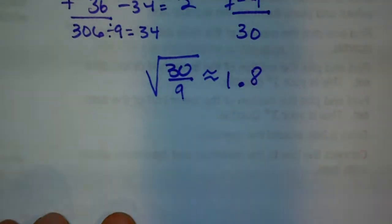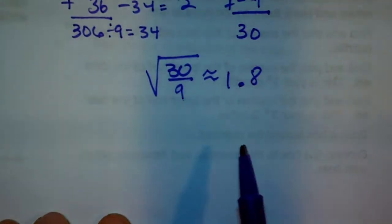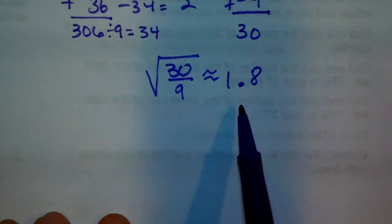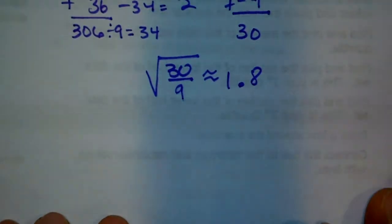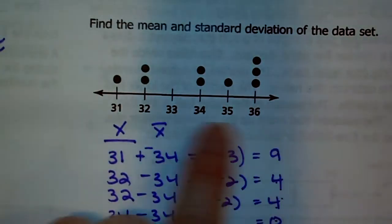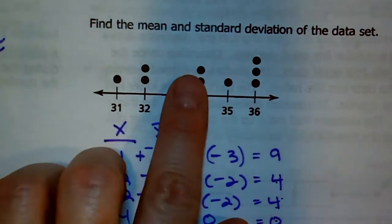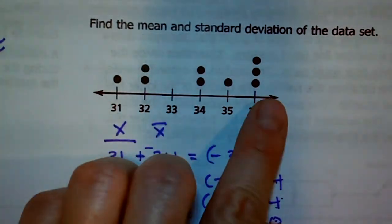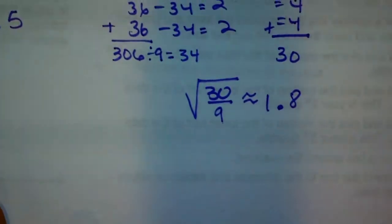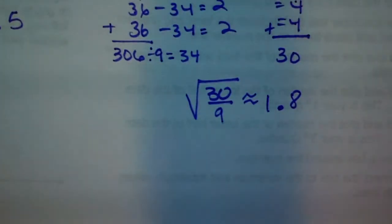We can see that in that data set, those values vary from the mean by about 1.8 — which makes sense because the range goes from 31 to 36, and we're only moving about 2 away in each direction. Hopefully this all makes sense. We'll do a starter to review a little bit more tomorrow. Have a good night.